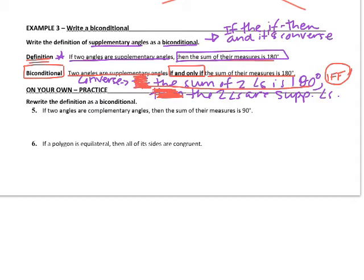Let's do on-your-own practice number five together. The statement is: if two angles are complementary angles, then the sum of their measures is 90 degrees. The converse would be: if the sum of two angles measures 90 degrees, then the two angles are complementary angles. We need to rewrite this as a biconditional with the words if and only if.